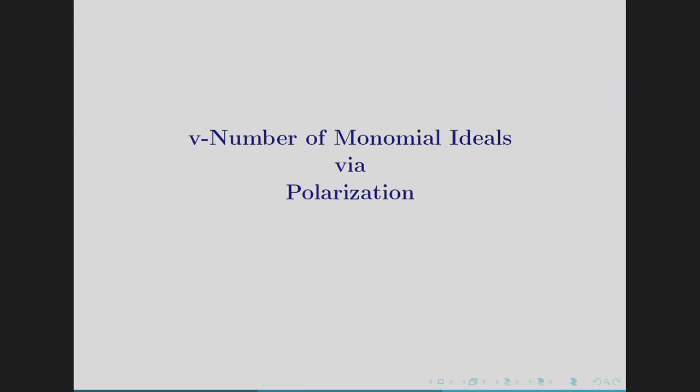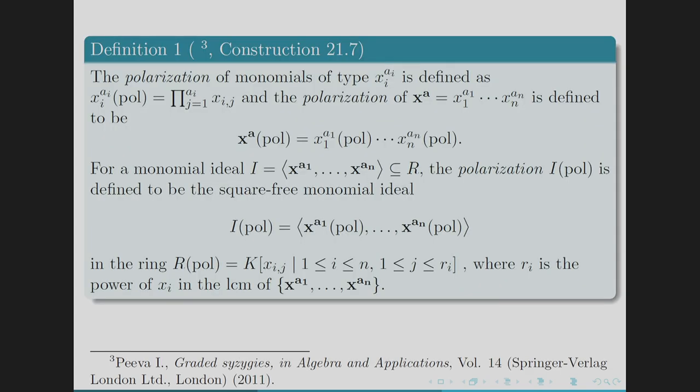Now we talk about the V number of monomial ideals via polarization. Polarization is a technique that extends a monomial ideal into a square-free monomial ideal in an extended ring, allowing us to more easily obtain results about properties and invariants such as Cohen-Macaulay property, regularity, dimension, and depth.